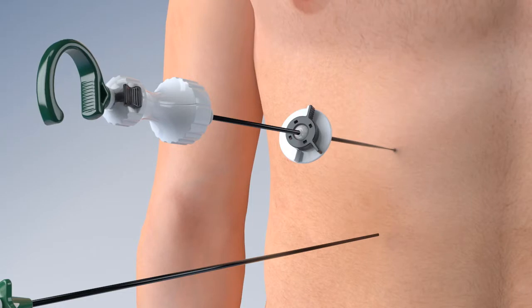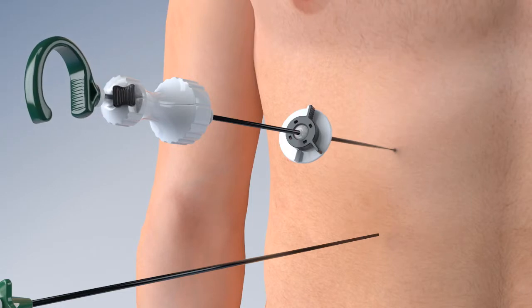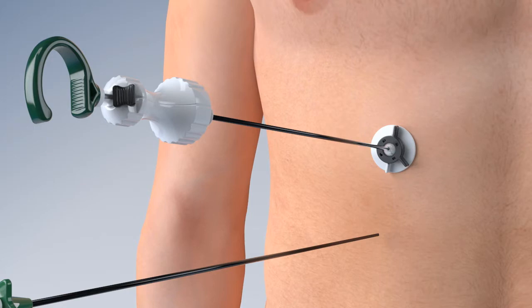The jaws can be locked onto the tissue and extracorporeally the stabilizing pivot disc can be locked for hands-free retraction at the distance and angle you desire.